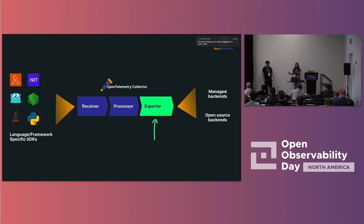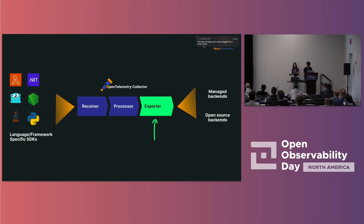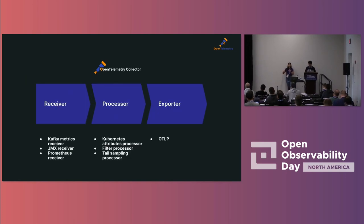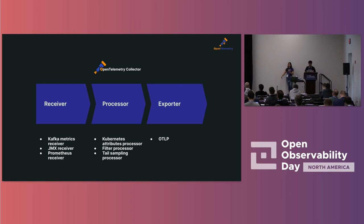You're going to want to export all this data to a managed or open source backend so you can analyze it. The component you use for this is the exporter. You can use the default OTLP exporter since most backends now support OTLP data natively. You can also use different exporters to send multiple data formats to multiple backends simultaneously — even sending traces and metrics to one backend and logs to another. All configuration is handled within a YAML file, making updates fairly straightforward, and you now have a centralized location for your observability configuration.